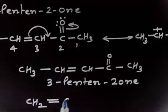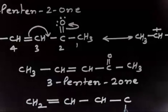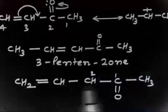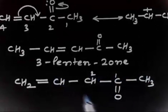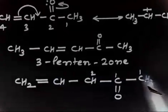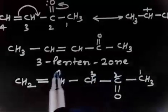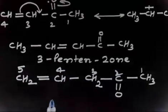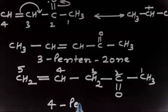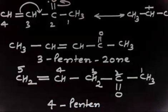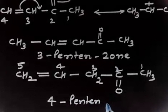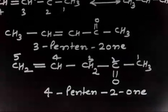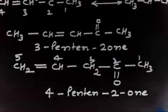The second molecule is 4-pentine-2-one: CH2 double bond CH, CH2, C double bond O, then CH3. Numbering the carbons 1 through 5, the double bond is at position 4 and the ketone is at position 2. So this is 4-pentine-2-one.